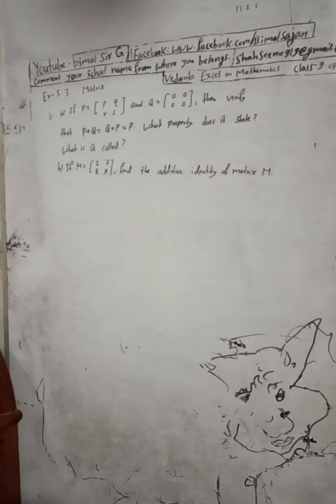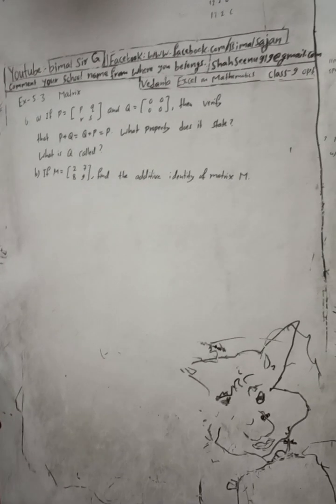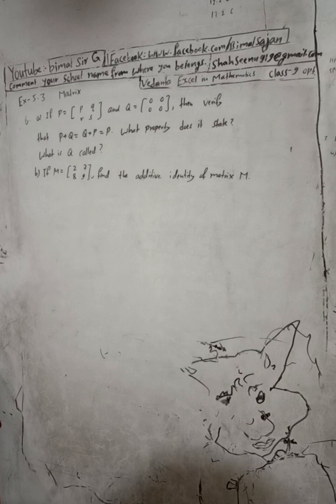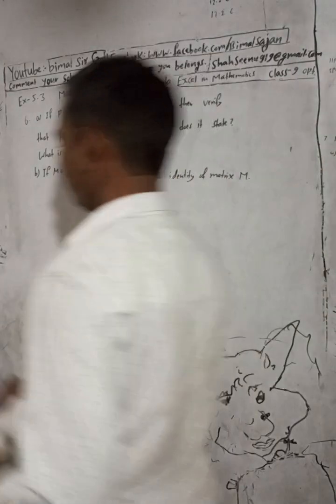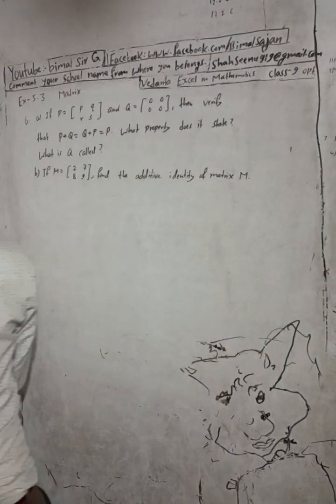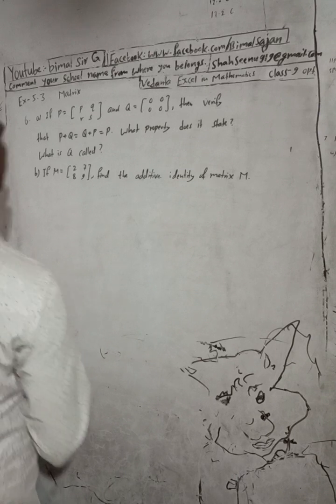Hi class 9 and 10 students, welcome back to Vimal Sharjee YouTube channel. This is question number 6a, exercise 5.3, matrix — Vedanta Excel in optional mathematics class 9. Don't forget to check the playlist; in the playlist you will get a lot of solutions.